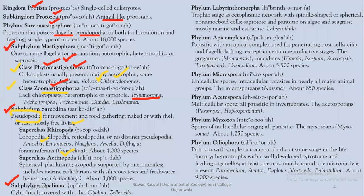Examples in Rhizopoda include Amoeba, Entamoeba, Naegleria, and Arcella. In Actinopoda, details about Heliozoans will be discussed. Opalinata is a smaller subphylum in which Opalina and Zelleriella are discussed.